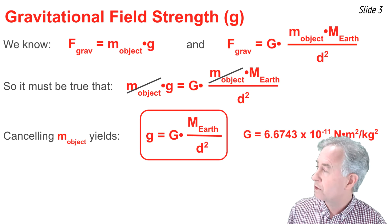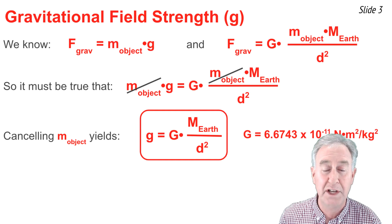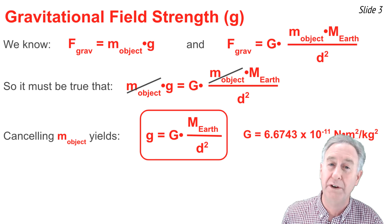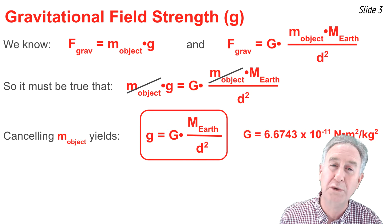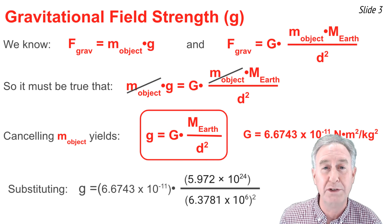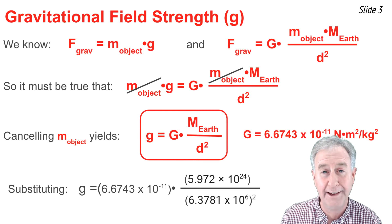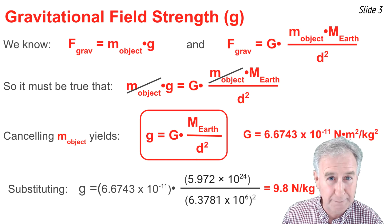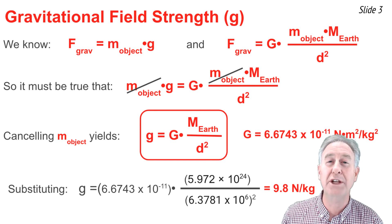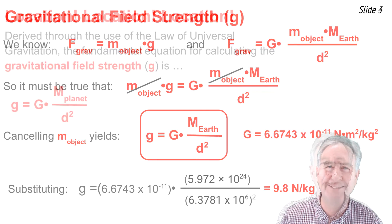If I use this equation to calculate the value of g on Earth's surface, I need to know the mass of the Earth and the radius of the Earth. When I substitute these two values into the equation to solve for g on Earth's surface, I get 9.8 newtons per kilogram — the same result for the value of g that we've been talking about all along.